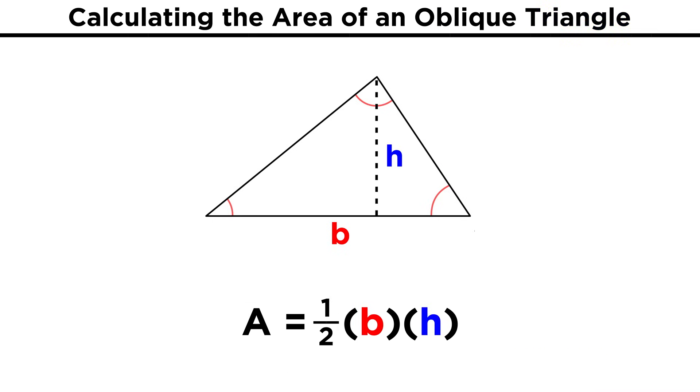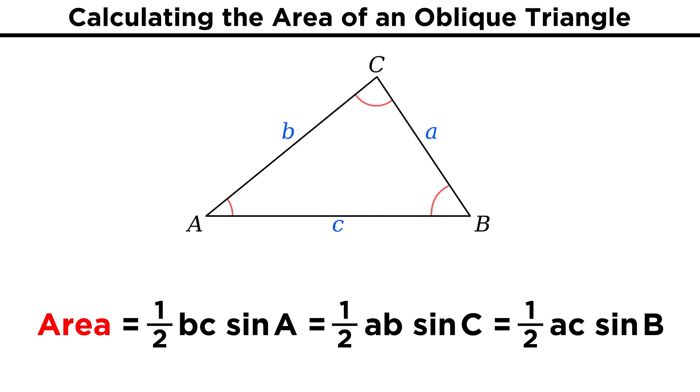The last thing we want to look at is the formula for calculating the area of an oblique triangle. We know that the area of any triangle is one-half base times height, but if we don't know the height, we can also use this formula where the area is equal to the product of the lengths of two sides and the sine of the angle between them. Since there are three angles, there are three ways to get this per triangle. That's pretty much all we need to know regarding the law of sines, so let's check comprehension.